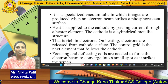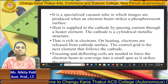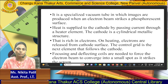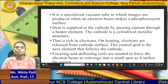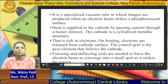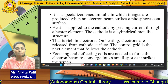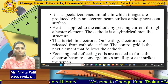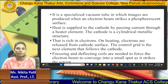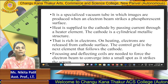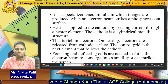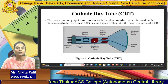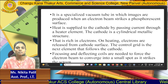The CRT is a specialized vacuum tube in which images are produced when electron beams strike a phosphor surface. Heat is supplied to the cathode by passing current through the heater elements. The cathode is a cylindrical metallic structure from which electrons are released when heated.